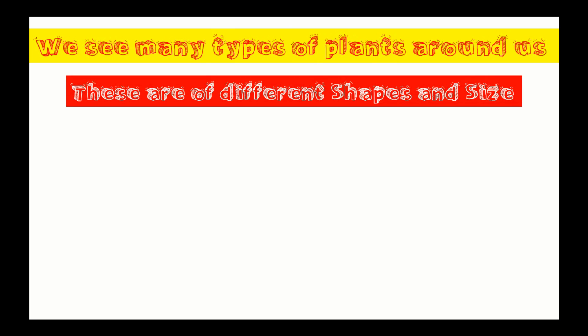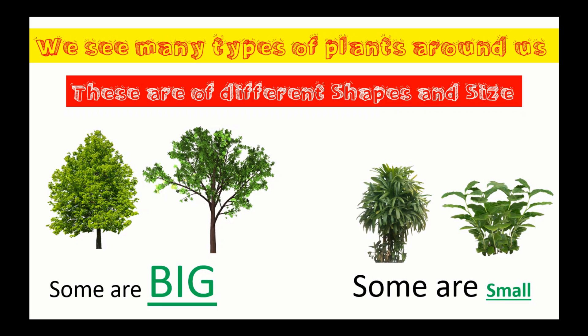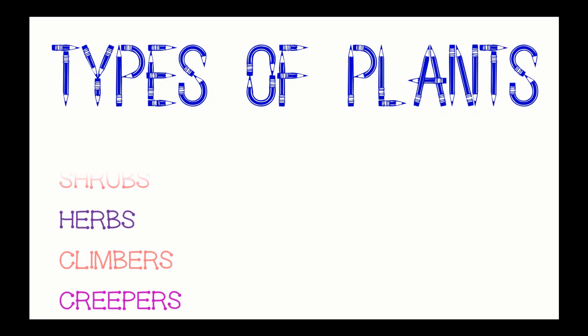We see many different kinds of plants around us. They have different shapes and different sizes — some are big and some are small. There are five different types of plants: trees, shrubs, herbs, climbers, and creepers.